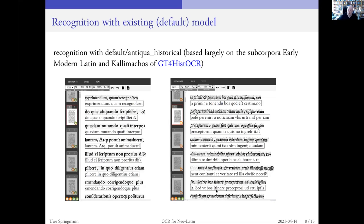Formerly, it meant trying to transcribe five or ten pages, or even more, and then train again. And the training took a long time, and it was only possible on a Linux machine. So that was a big barrier to the practicing neo-Latinist — it was practical for computer scientists, but not for the normal Latinist. But now it's possible to actually train on top of an existing model.